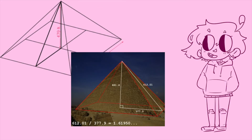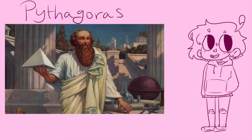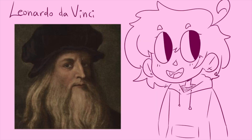Some scholars argue that the Egyptians used the golden proportion when designing the Great Pyramids around 3000 BC. Ancient Greeks applied the golden ratio when building the Parthenon. Around 500 BC, Pythagoras claimed that the golden ratio is the basis for the proportions of the human figure.